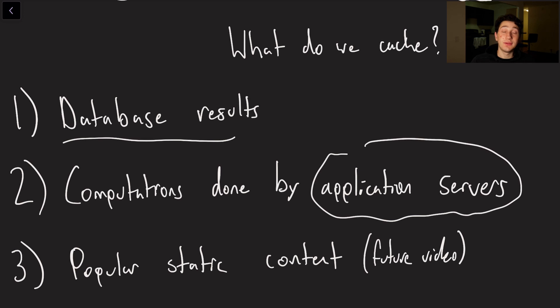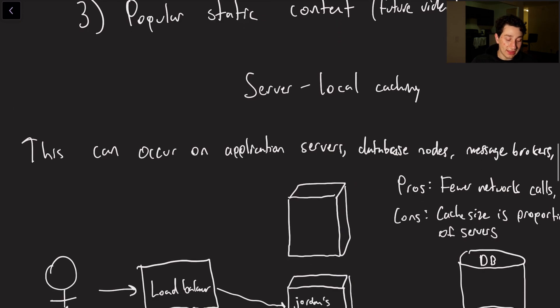Another thing is computations done by application servers, for example sometimes a database can give you partial results but you either want to merge that with some other results that you have, perform some subsequent computations or anything like that, and so actually performing a caching of the results of what was on the server can be very useful as well. And then also just like popular static content that could be images, it could be web page files, anything like that we're going to devote an entire video to that topic alone when we talk about CDNs.